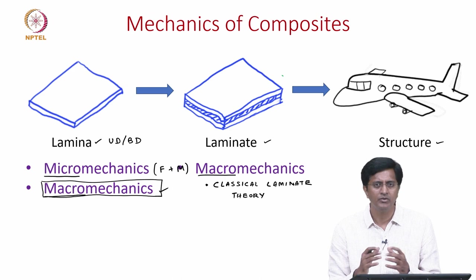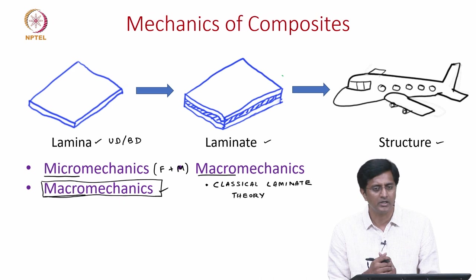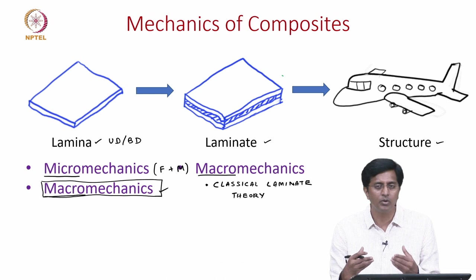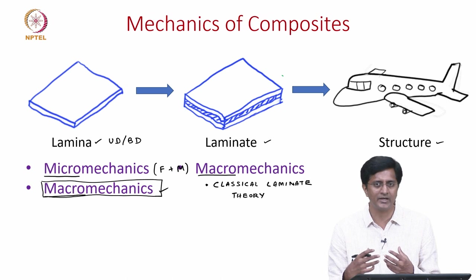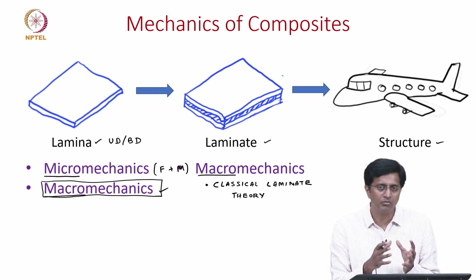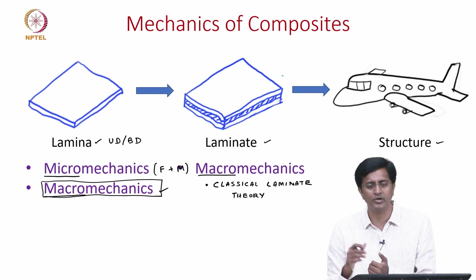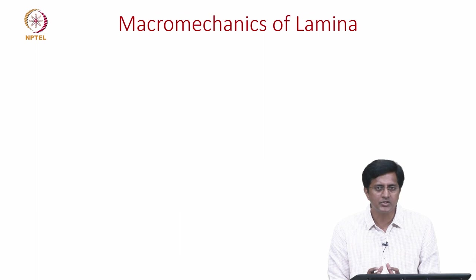Even before we discuss about the macro mechanics of the lamina, we need to cover some basic information about how we deal with stresses and strains starting with a 3D material. Once we start looking at the 3D stresses and 3D strains, we will also look at what is the relation between these stresses and strains. Even before we jump into composites, we will start with a more generalized anisotropic material and from there see what assumptions lead us to composites, and later how further assumptions take it down to a simple isotropic material.